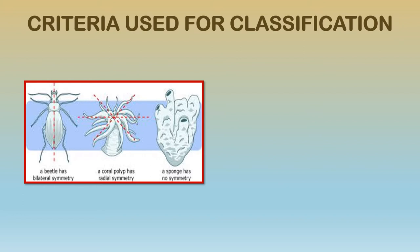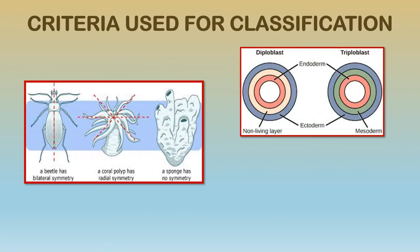So three types of symmetry: bilateral, radial, and asymmetry. Then classification on whether the animal is diploblastic or triploblastic. Diploblastic means having two germ cell layers — only ectoderm on the outside and endoderm in the center, with a non-living layer in between. A triploblastic organism has three germ cell layers: the inner endoderm, outer ectoderm, and a middle mesoderm.